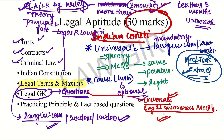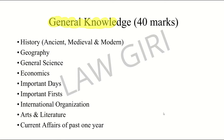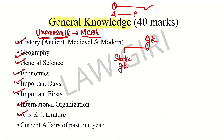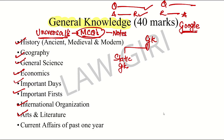GK is 40 marks and can be divided into two parts. For Static GK: cover History, Geography, General Science, Economics, Important Days, Important Firsts, International Organizations, Arts and Literature — these are your topics. For MCQs from Universal's where you covered the Indian Constitution, read the question, check if you know the answer; if not, find the reason and make notes.